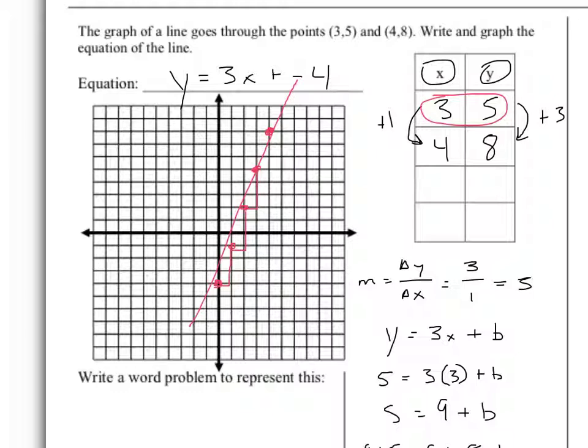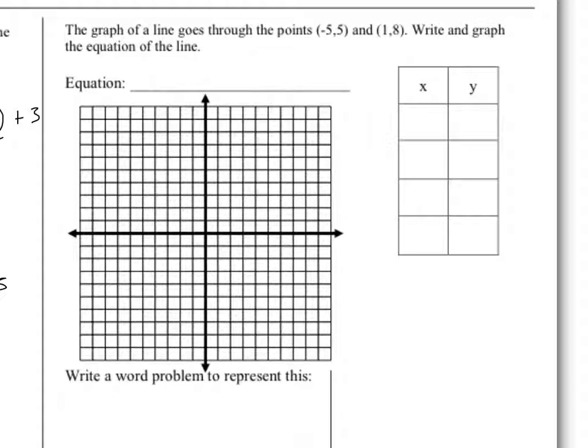For the next problem, I'm going to do the same thing. I'm going to toss my two points into my t-chart. That's going to help me calculate my rise and my run. My change in y is a positive 3. Going from negative 5 to 1, that's a positive 6. So my change in y over my change in x, my slope is equal to positive 3 over 6, which I can simplify to 1 half.